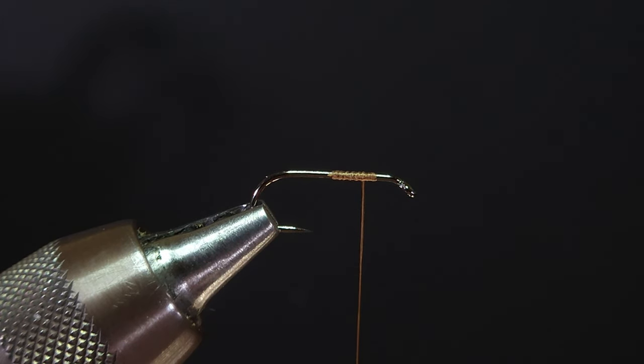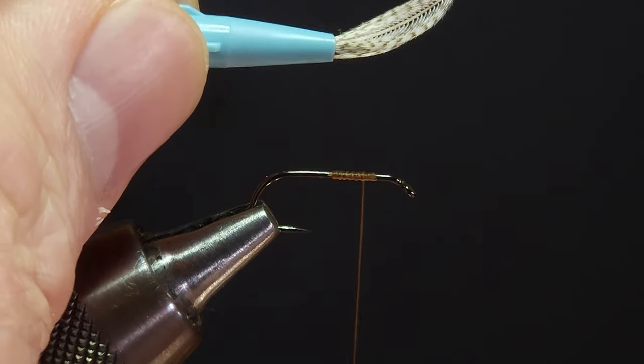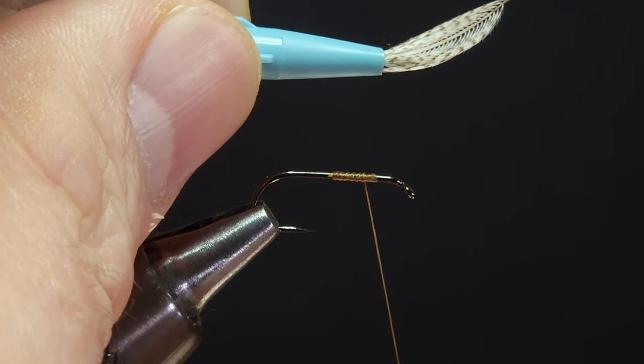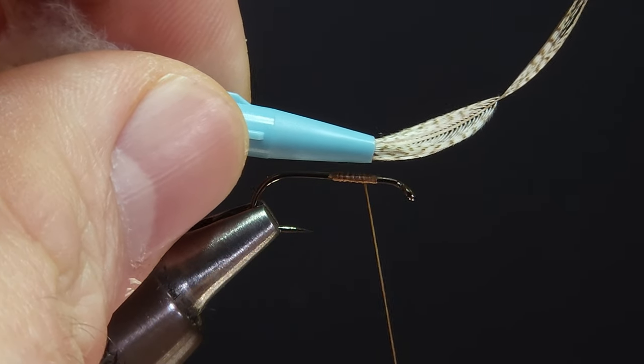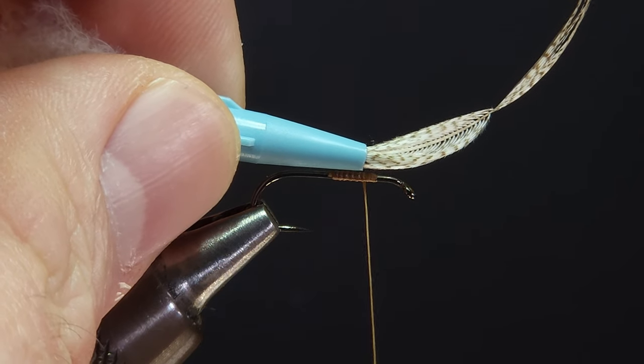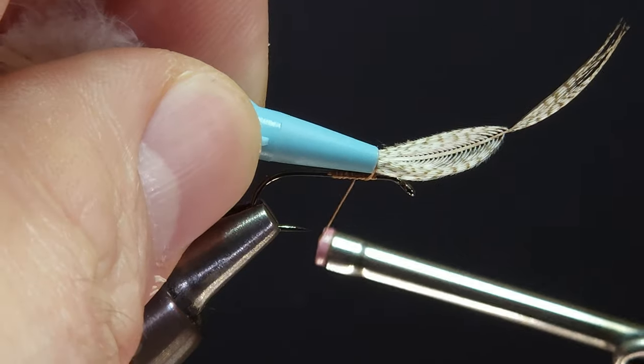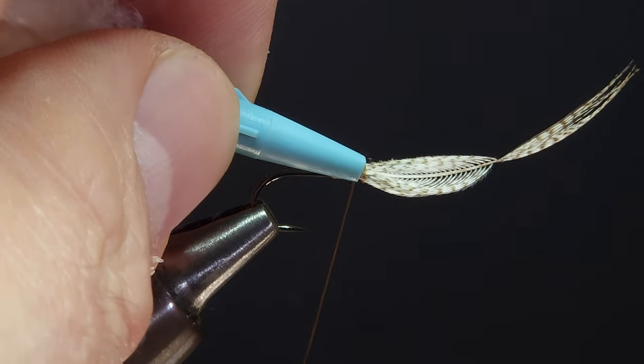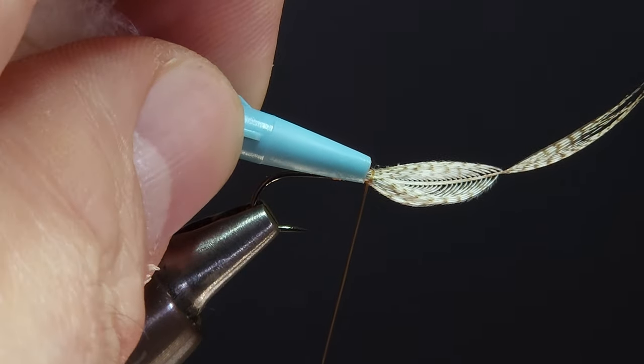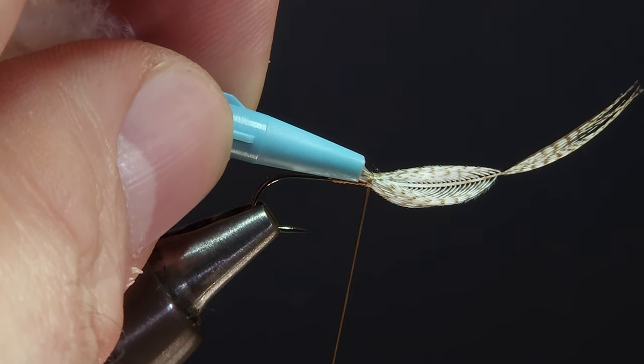So I've got my wing material sized and I'm ready to mount it to the hook shank. Now that I've got the material sized the way I want, it's simply a matter of using the nozzle to position the material over the established wing mounting position where my thread is waiting for me. And simply take a single wrap of thread to secure the material to the shank.